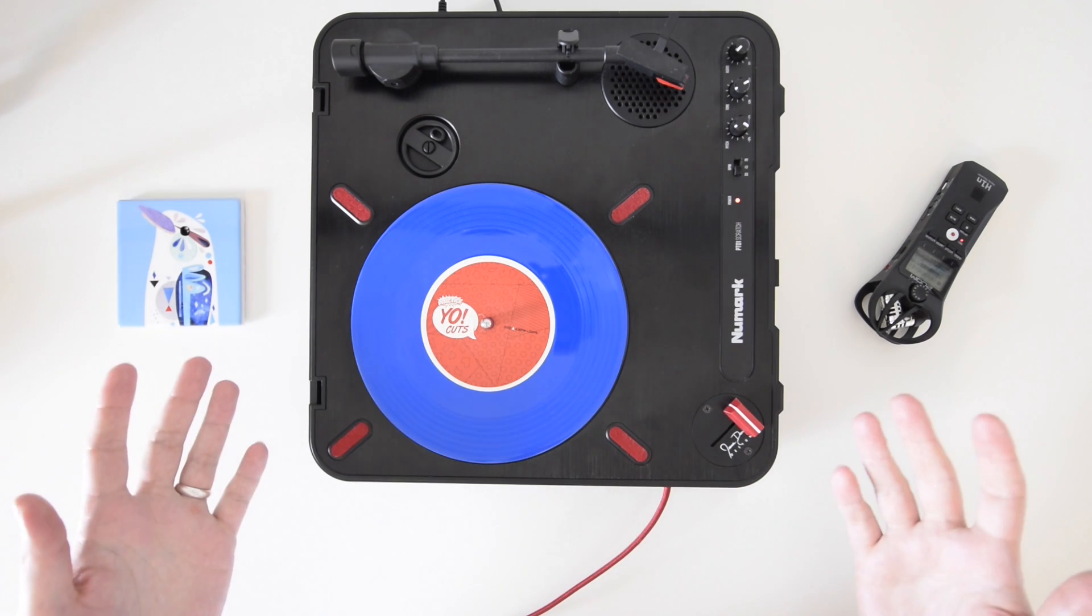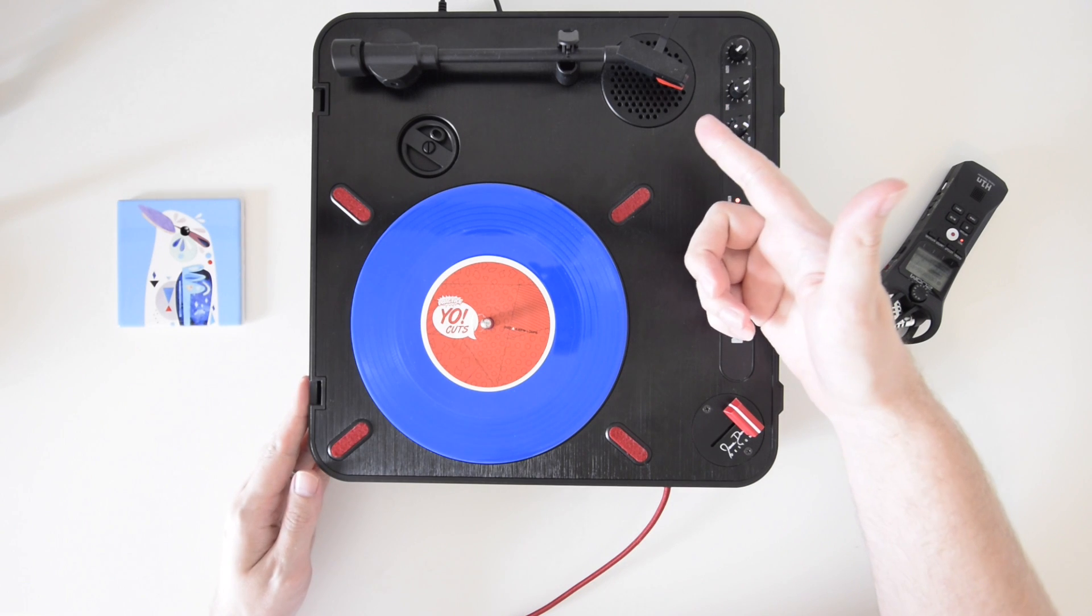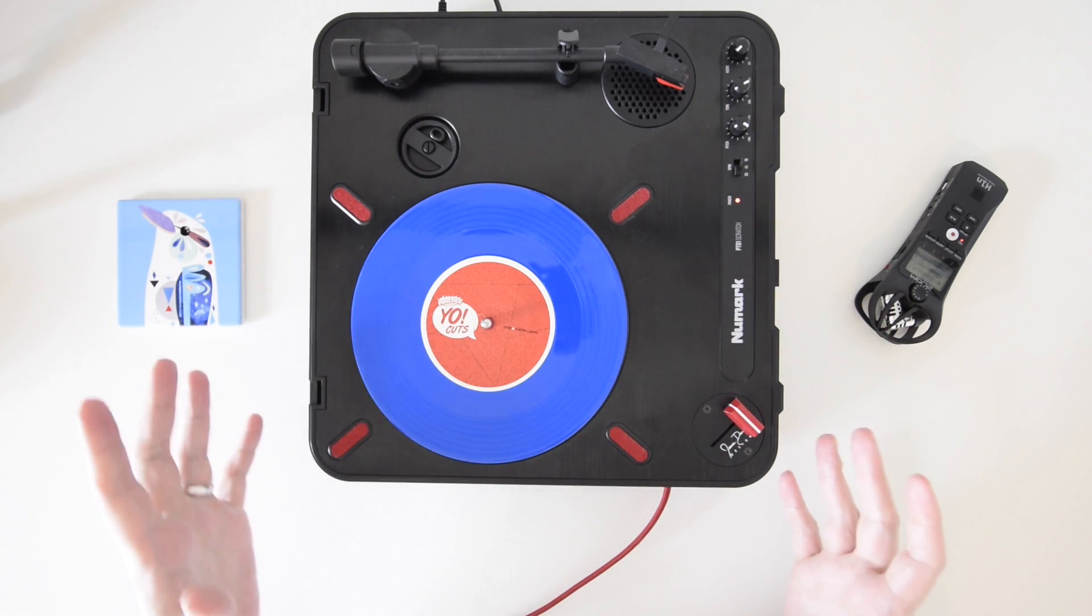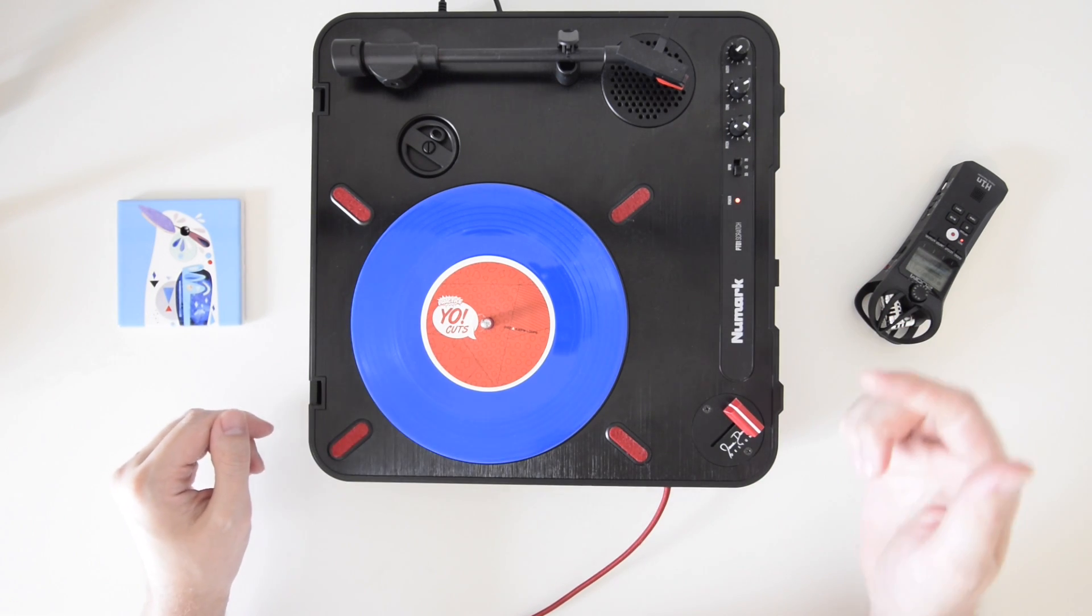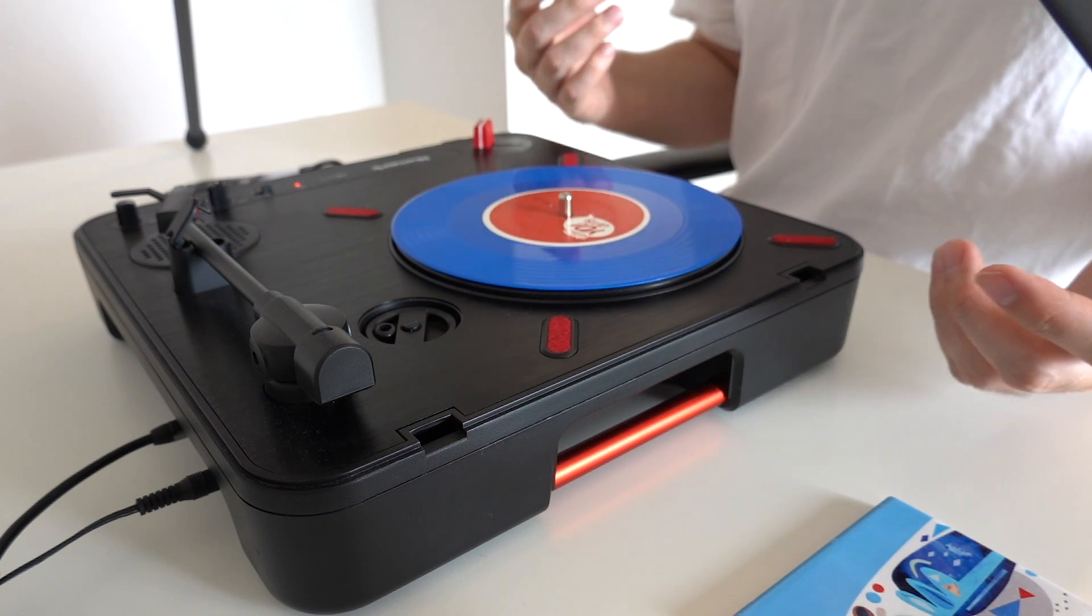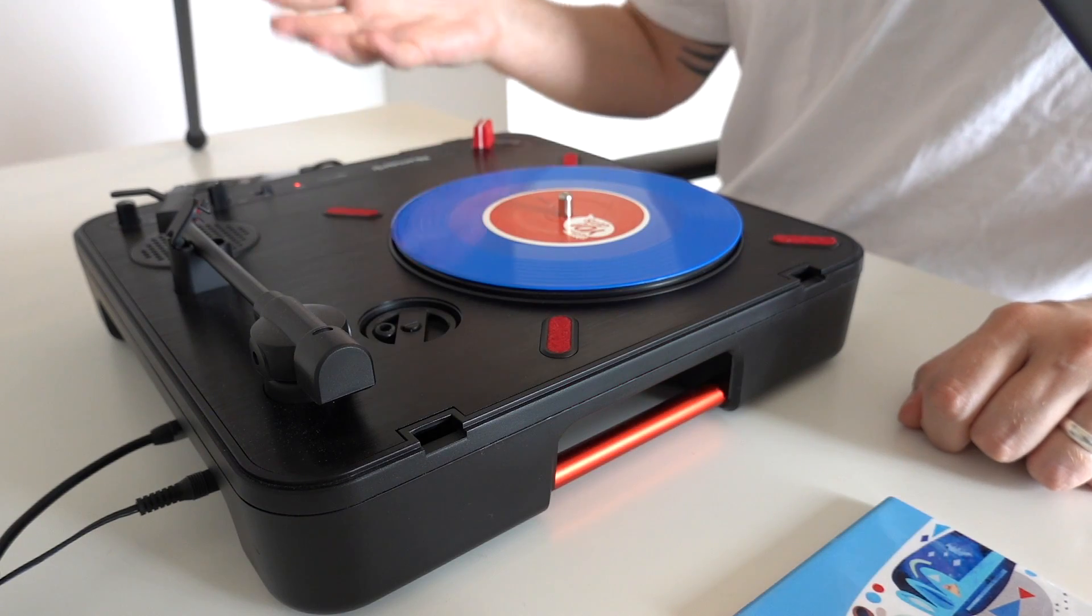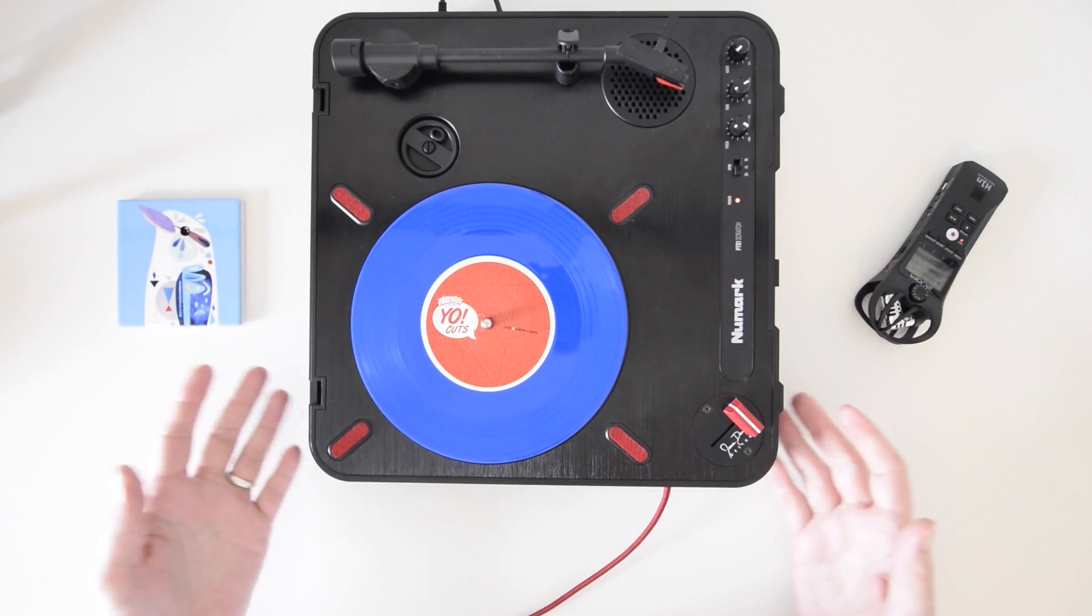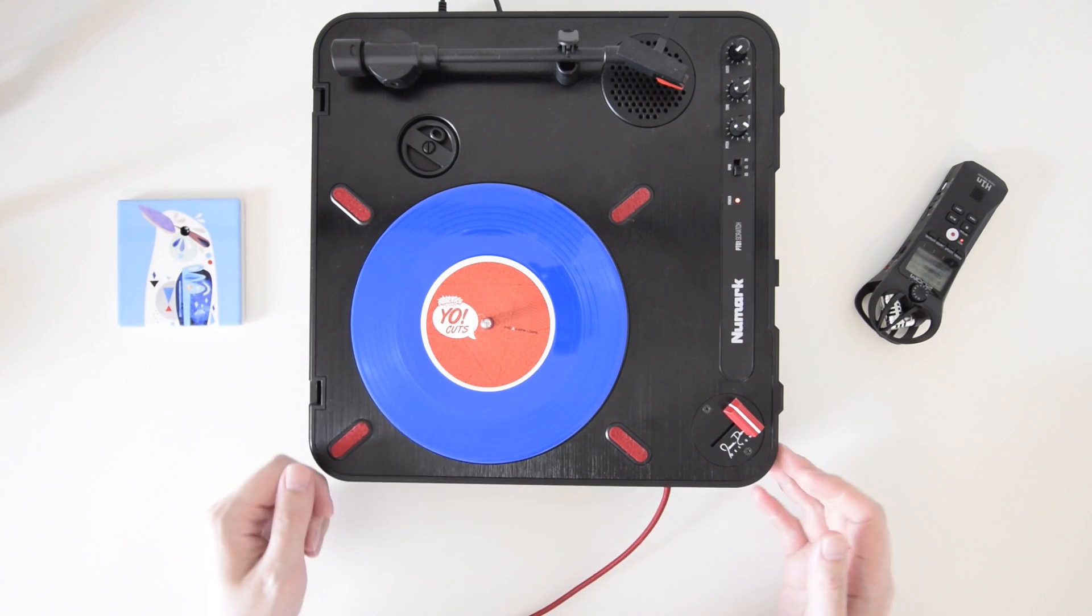Okay and the last mod that I've done to this PT01 was upgrade the needle. Now out of the box these come with just a plastic needle and to be fair it does the job, but upgrading to a diamond tip needle is definitely the way to go. I've chosen the simplest method of doing this and just buying a new needle but of course if you wanted you could upgrade the whole tone arm. Now there are a ton of other mods you can do on PT01s and who knows I might get some in the future but for now I'm pretty happy with what I've got.